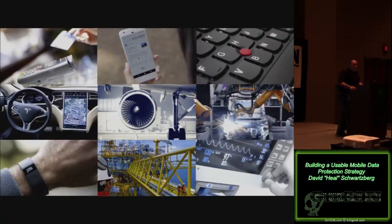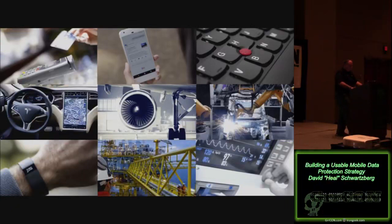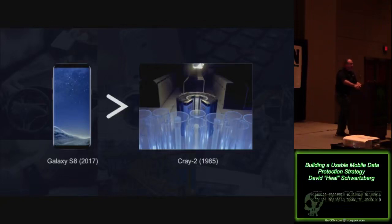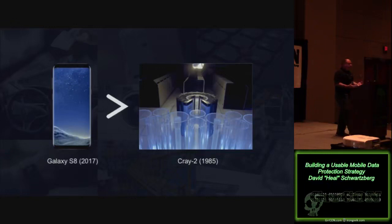Who thinks we're winning this battle? We're not winning — we're losing it. Think about why. The S8 is more powerful than the Cray-2 from 30 years ago. The devices in our pockets are more powerful than what they used to put astronauts on the moon. That's cool, but also scary — because your device could be used for mining cryptocurrency without you being aware of it. Things are happening behind the scenes.